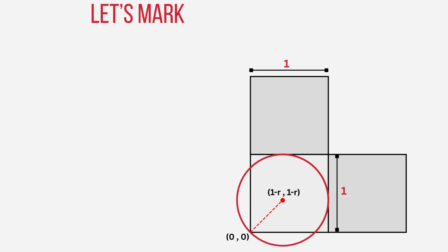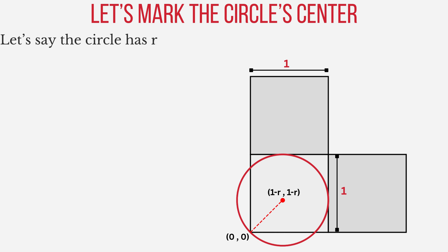Since the circle is perfectly touching both walls, its center must be exactly R units away from each wall. So we place the center at (R, R).